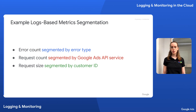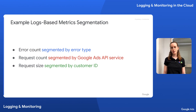Most monitoring tools allow you to segment these metrics even further. For instance, we could break down error count by error type, request count by Google Ads API service, and request size by customer ID. Segmenting metrics in this way provides a much clearer picture of our application and improves the ability to debug, optimize performance, and understand user experience.